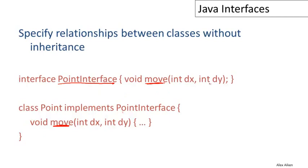And if the point interface had other methods then the point class will also have to implement those methods by having a method of the same name with the appropriate types of arguments and result.